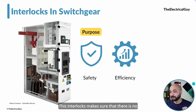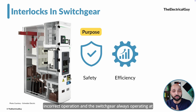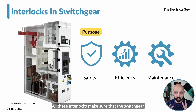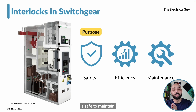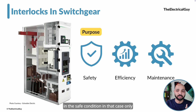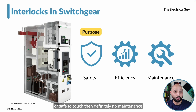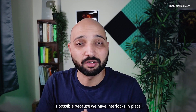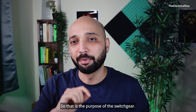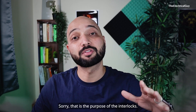The second purpose is efficiency. Interlocks make sure there is no incorrect operation so the switchgear always operates at the highest efficiency. The third purpose is maintenance. Interlocks make sure that the switchgear is safe to maintain and safe to operate, and that maintenance is only carried out when the switchgear is completely in a safe condition. If the switchgear is not safe to touch or operate, no maintenance must be carried out — all of this is possible because we have the right interlocks in place.